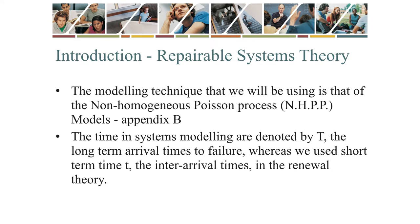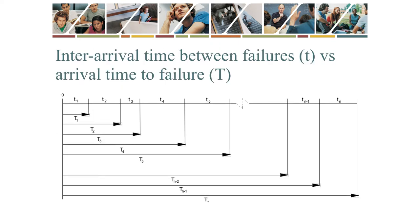We call the uppercase T the arrival time to failure and the lowercase t the inter-arrival times between failures. This terminology will become clear on the next diagram. We represent the ROCOF with the Greek letter Rho, and write it Rho(T) to state that the ROCOF changes as the system ages. Here we have the relationship between the arrival time to failure — that is uppercase T — and the inter-arrival times between failures — that is lowercase t.